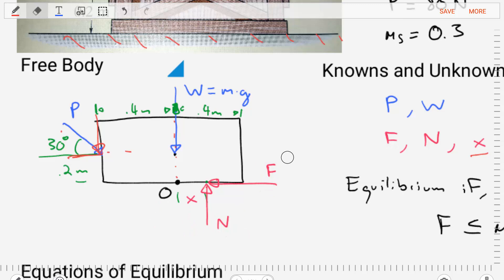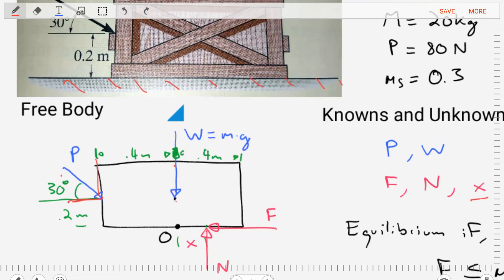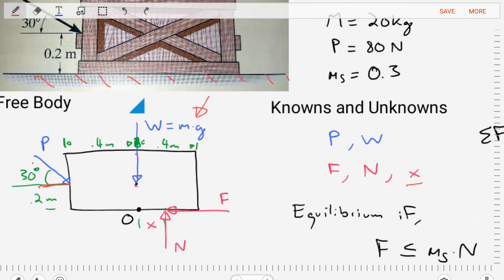So if we look at this diagram we have three unknowns: F, N, and the distance x. Let's apply the weight on our body to the centroid of it by taking the mass and multiplying it by gravity. Let's also place that force that we know, P, at an angle of 30 degrees at a up from the floor of 0.2 meters. Let's put that there as well. Those are knowns.